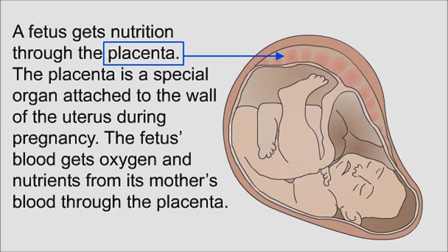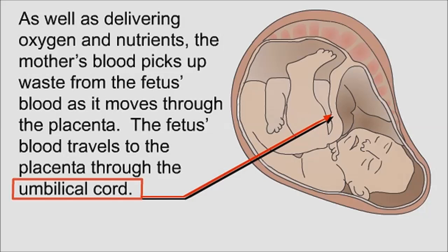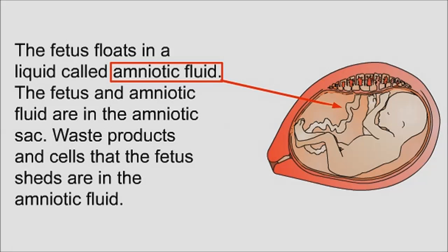During pregnancy, the fetus's blood gets oxygen and nutrients from the mother's blood through the placenta. As well as delivering oxygen and nutrients, the mother's blood picks up waste from the fetus's blood as it moves through the placenta. The fetus's blood travels to the placenta through the umbilical cord.